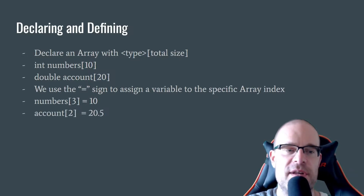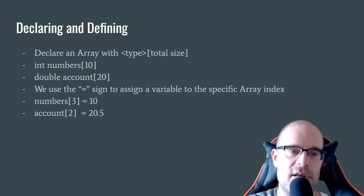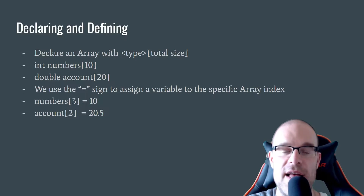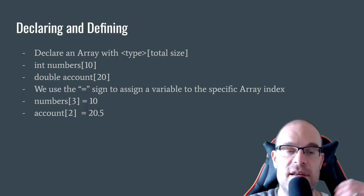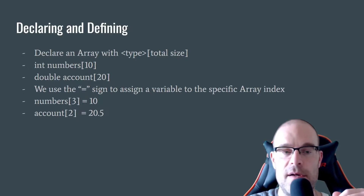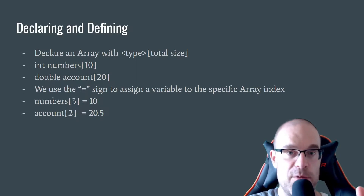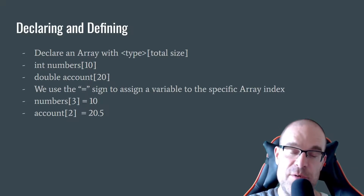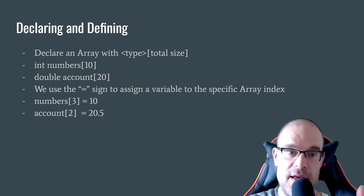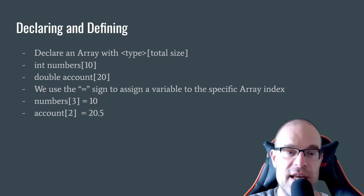Let's look at our account array of doubles. The account item at index 2 — we're going to be assigning it 20.5. Remember, we're working with a zero-based array, so index 2 is actually the third element in that list of account numbers.